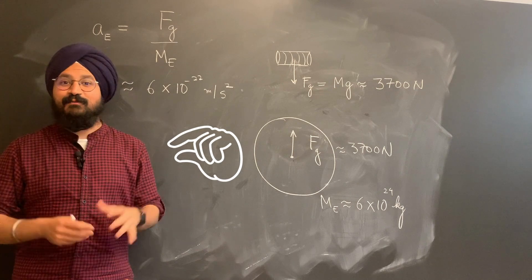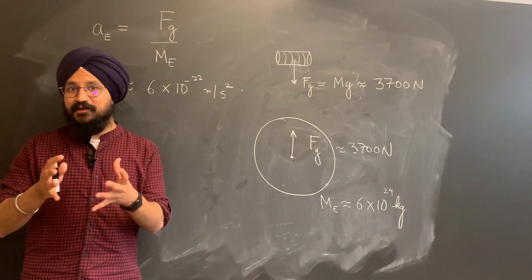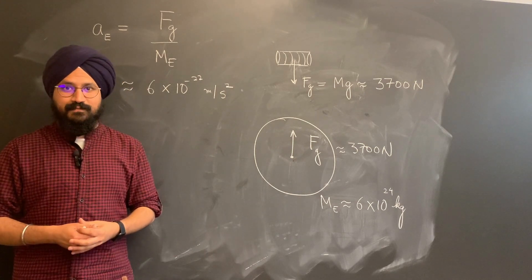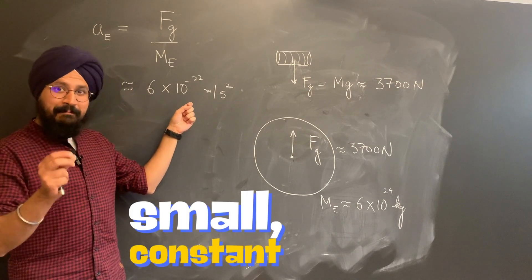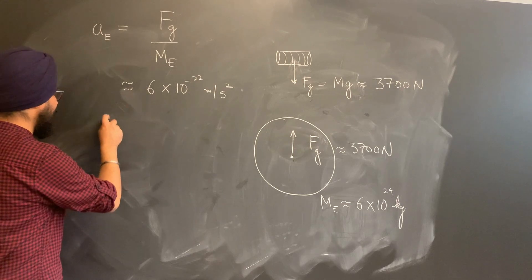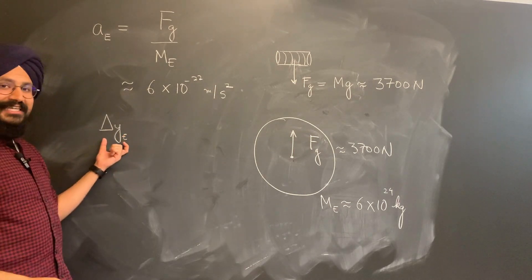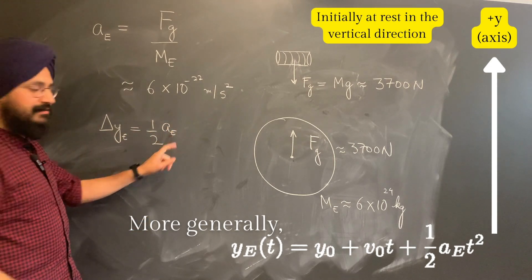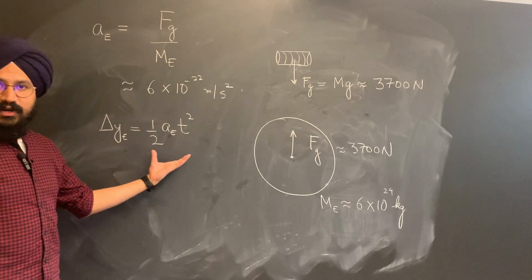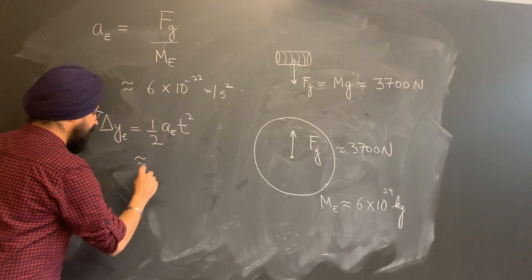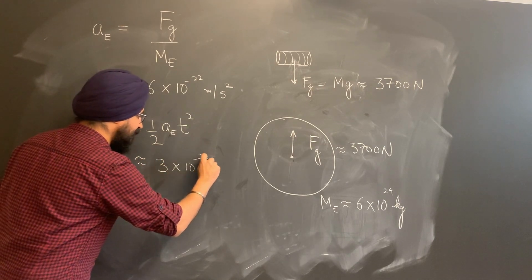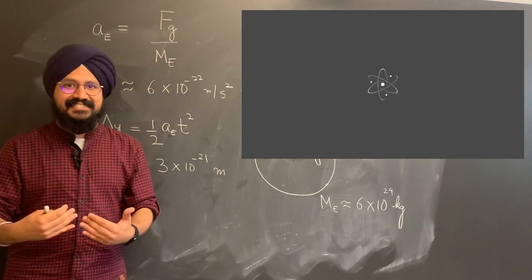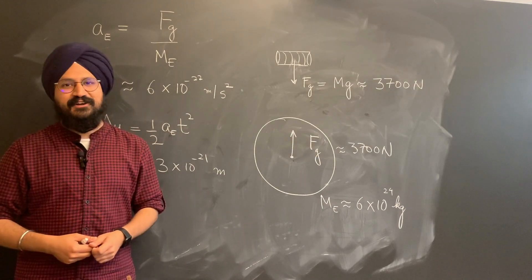That's teeny tiny, almost laughably small tiny. To give you a sense, in the 3.2 seconds that Dave Monday fell to the water below, the earth undergoing this small but constant acceleration would have moved up by a distance, let's call that delta ye for the earth, about one half acceleration of the earth, a sub e, times the time of the fall squared, one half at squared. This comes out to be about 3 times 10 to the minus 21 meters. That's quite small, almost a million times smaller than the diameter of the hydrogen atom.